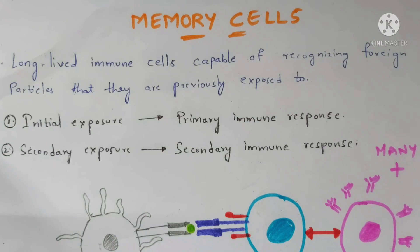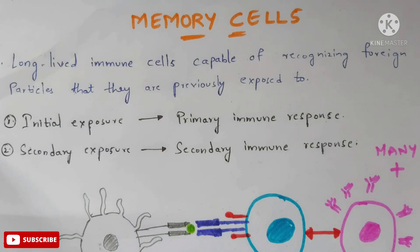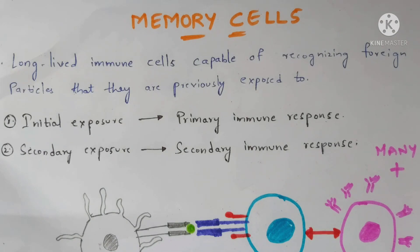Some memory cells will be long-lasting and some will be short-lasting. Memory cells are present in our body, and if the same kind of pathogen enters into our body, these memory cells will start recognizing those pathogens which have already previously entered, and try to kill them. This helps your body get protected much faster compared to the previous attack.